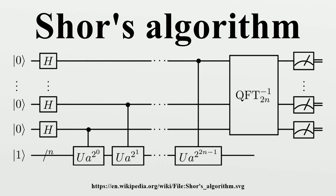Shor's algorithm, named after mathematician Peter Shor, is a quantum algorithm for integer factorization formulated in 1994. Informally it solves the following problem: given an integer n, find its prime factors on a quantum computer.